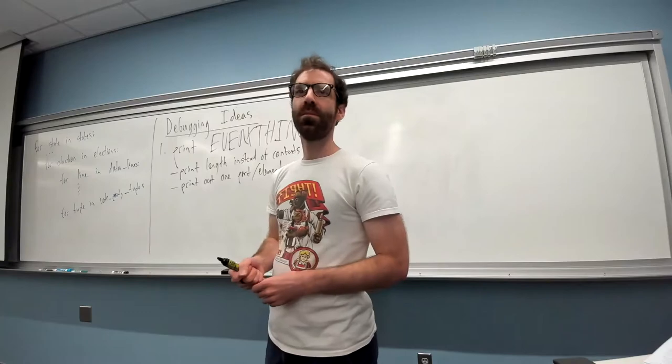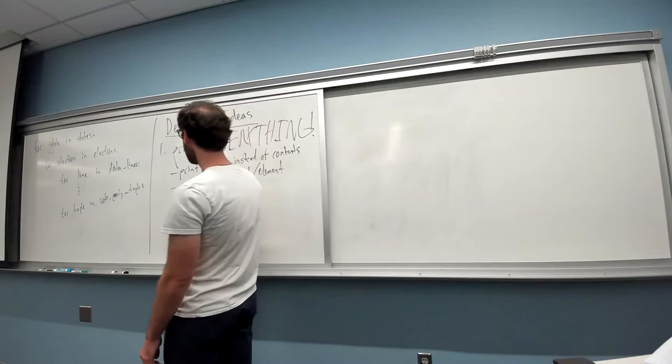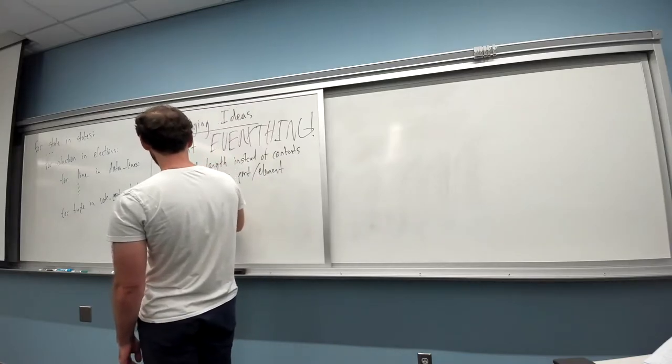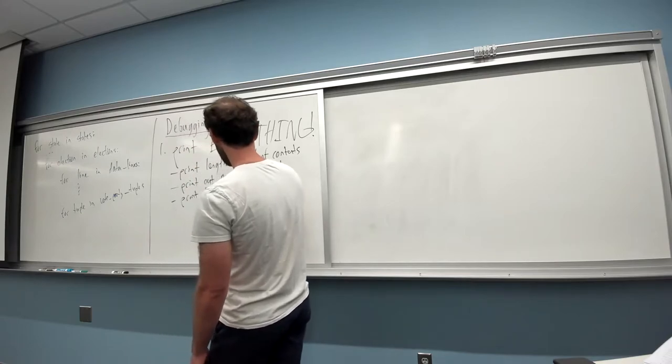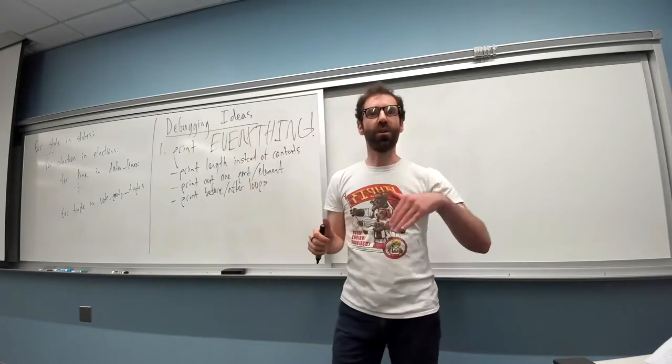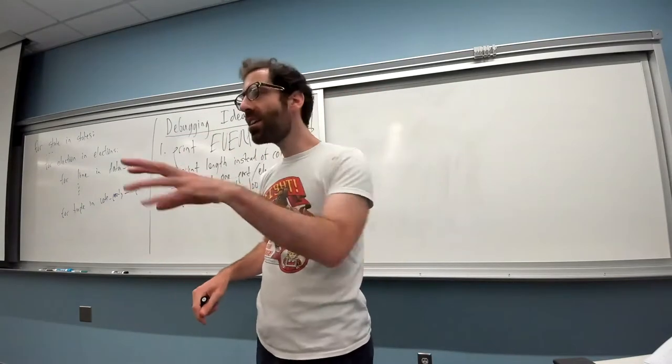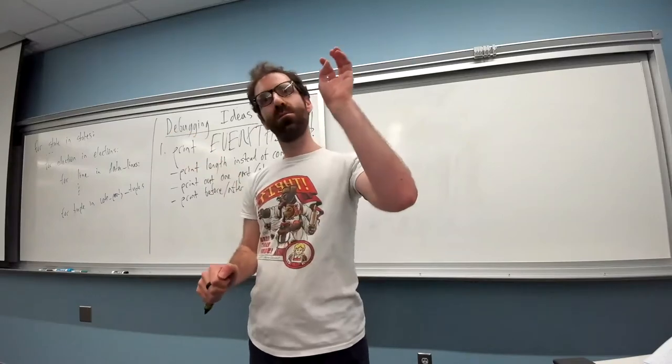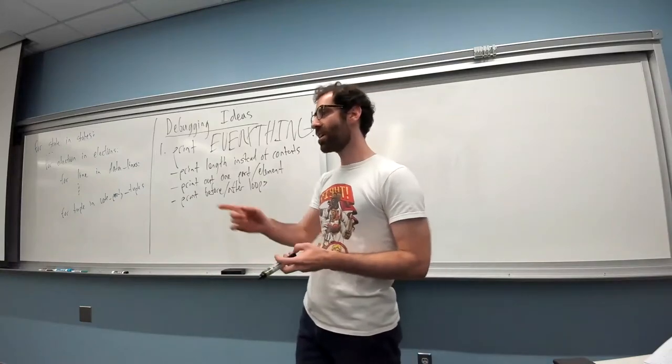Isa: Printing like outside of loops to make sure if you initialize any variables, if they're still maintaining that number or the information. Yeah, if we print before and after a loop, that's a good way to check by the time we get to the end, is it what we expect? Were things what we expected before we even started the loop? Yeah, exactly.